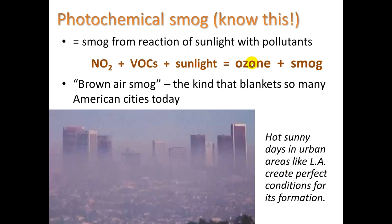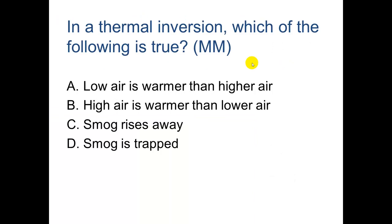Tropospheric ozone causes irritation to eyes and mucous membranes. For plants, it causes stunted growth, earlier death, and yellowing of leaves. With yellow leaves, a plant cannot perform photosynthesis as effectively.